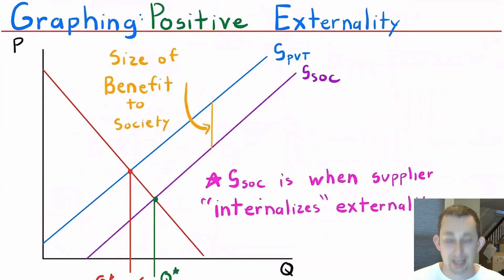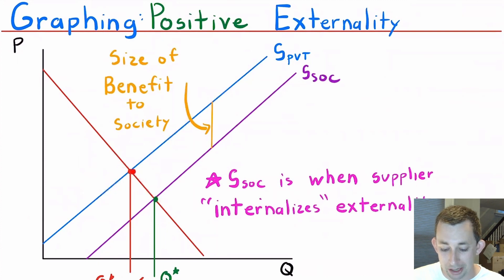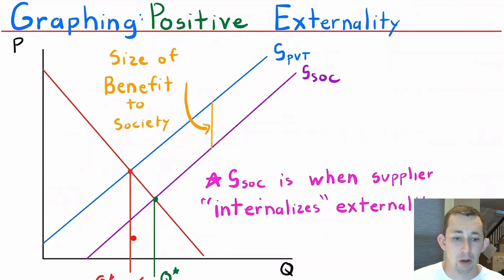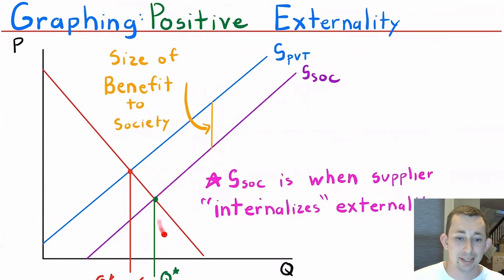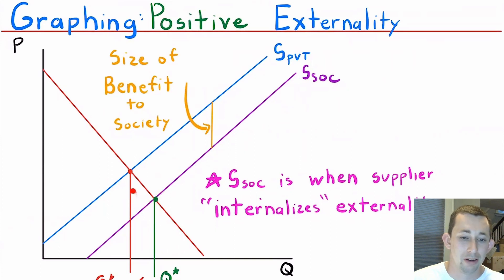It's the opposite with a positive externality. We have a private supply curve and a societal demand curve. When we don't internalize the externality, we have a lower level of Q* — the private amount of supply. When we add the benefit, that brings the supply curve down by the size of the benefit to society, giving us the social supply curve. When we plot that against demand, we get a higher level of Q* society — the level that society actually wants — which is higher than the privately supplied quantity. This is when we internalize the externality.